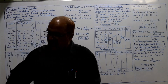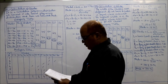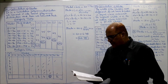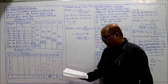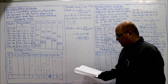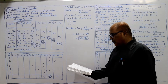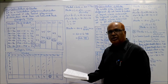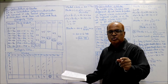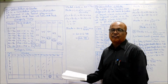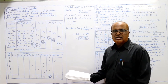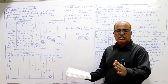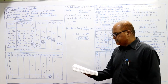Now we'll start problem number 12. Calculate mode from the following data — marks: below 10, below 20, below 30, below 40, all values are given. It's a cumulative frequency distribution; we have to convert it into normal frequency distribution, just like the previous problem.